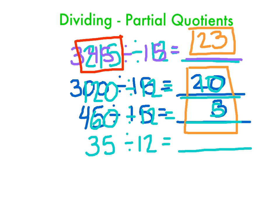12 goes into 35 two times. Which is 24. So we are going to have a remainder. Of 24 to 35 is going to be a remainder of 9.